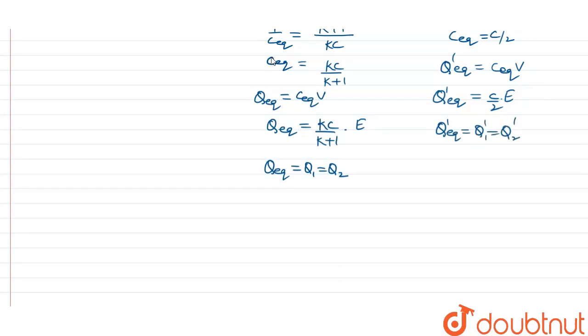We have to find out Q dash equivalent over Q equivalent. That equals Q dash 1 over Q1, and that equals Q dash 2 over Q2. So that equals (C/2) times E divided by kC/(k+1) times E.